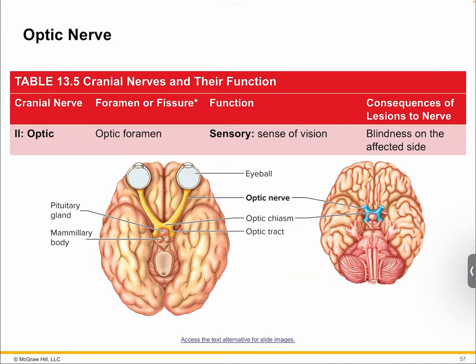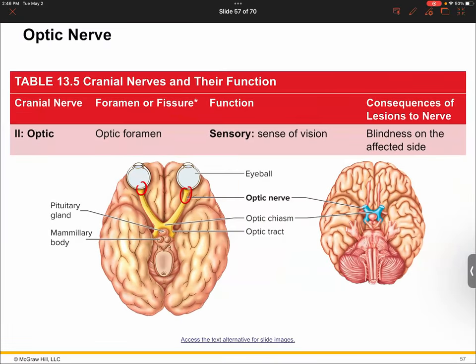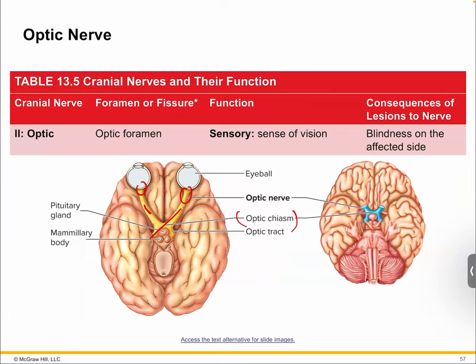Optic nerve is number two. A lot of you saw the optic nerve on today's exam — this is clearly sensory, your reception of visual data. The visual data is received by your optic nerve and goes into your optic cortex. The optic chiasm is where your two optic nerves cross over each other — the right eye sends information to the left side of the brain, and the left eye sends it to the right side.